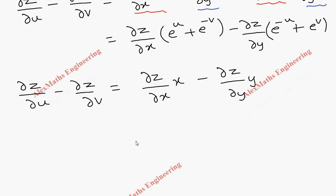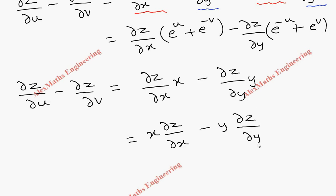So we got dou z by dou u minus dou z by dou v equal to x into dou z by dou x minus y into dou z by dou y. Since it's a product, we can interchange x and dou z by dou x, so we can write x into dou z by dou x minus y into dou z by dou y. Hence proved.